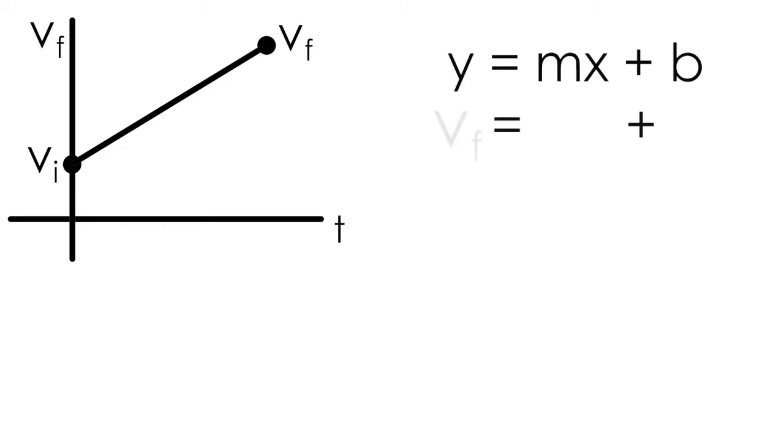We know our y-axis represents final velocity, and the x-axis represents time, so we can replace x and y with t and vf respectively. Our object begins its motion with some initial velocity indicated by this red point. We'll call that vi and place that in the b position of our equation, which indicates the y-intercept of the graph, or where the line crosses the y-axis.